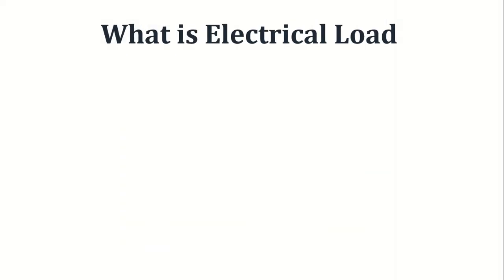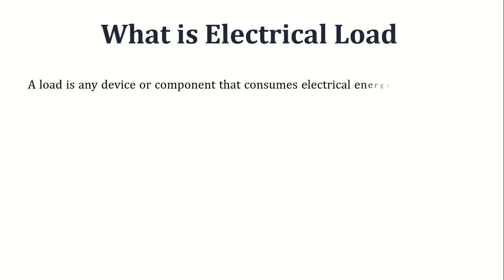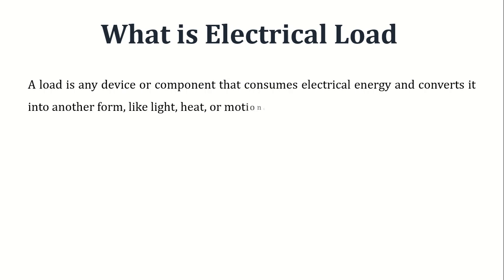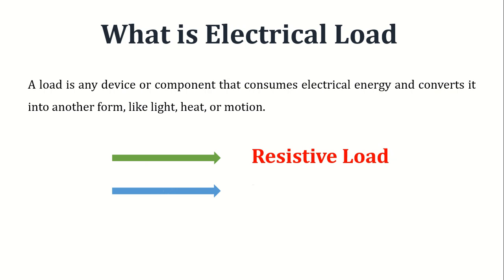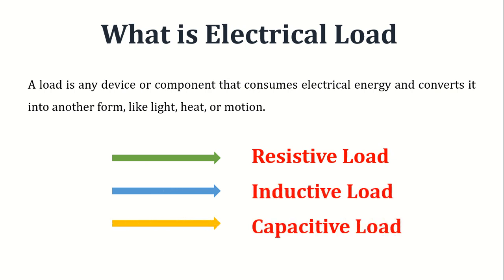First, the question is: what is a load? In electrical systems, a load is any device or component that consumes electrical energy and converts it into another form, like light, heat, or motion. Loads can be categorized into three main types: resistive, inductive, and capacitive. Let's explore each one.